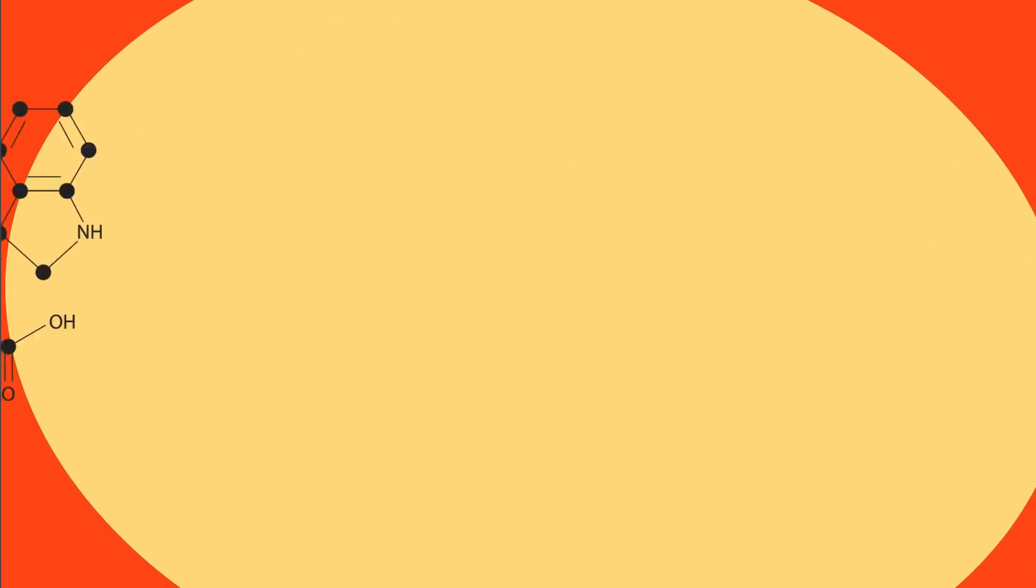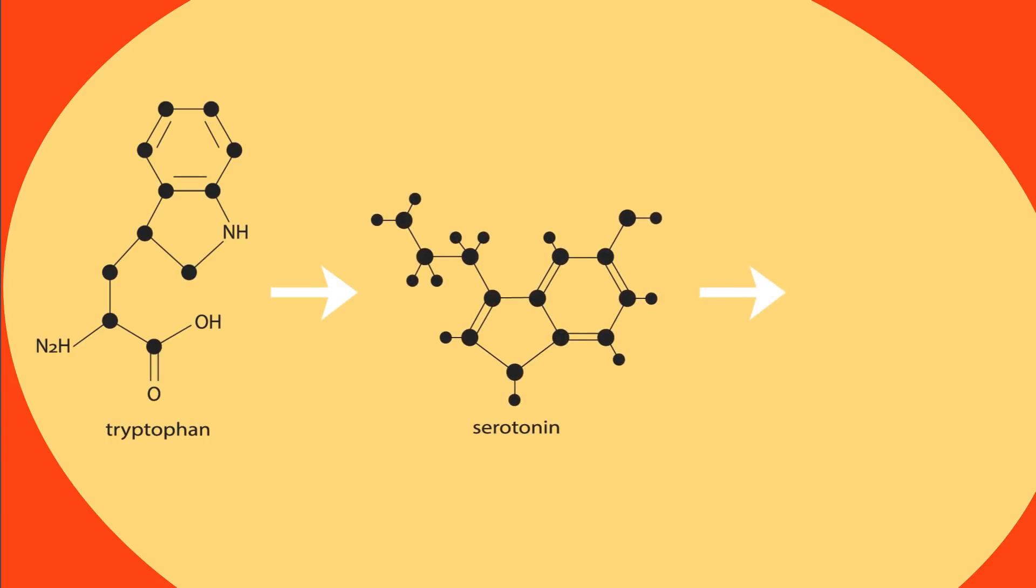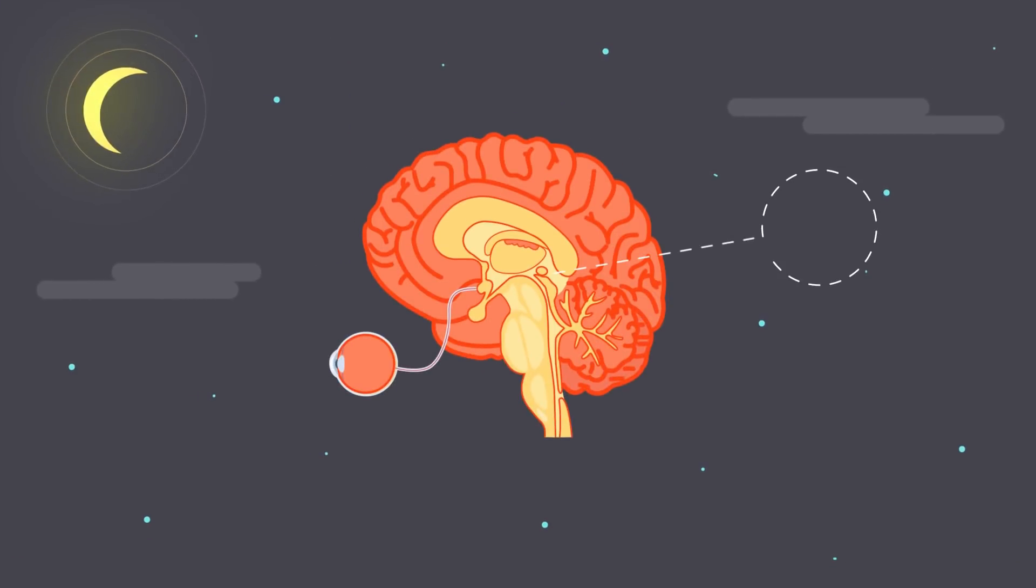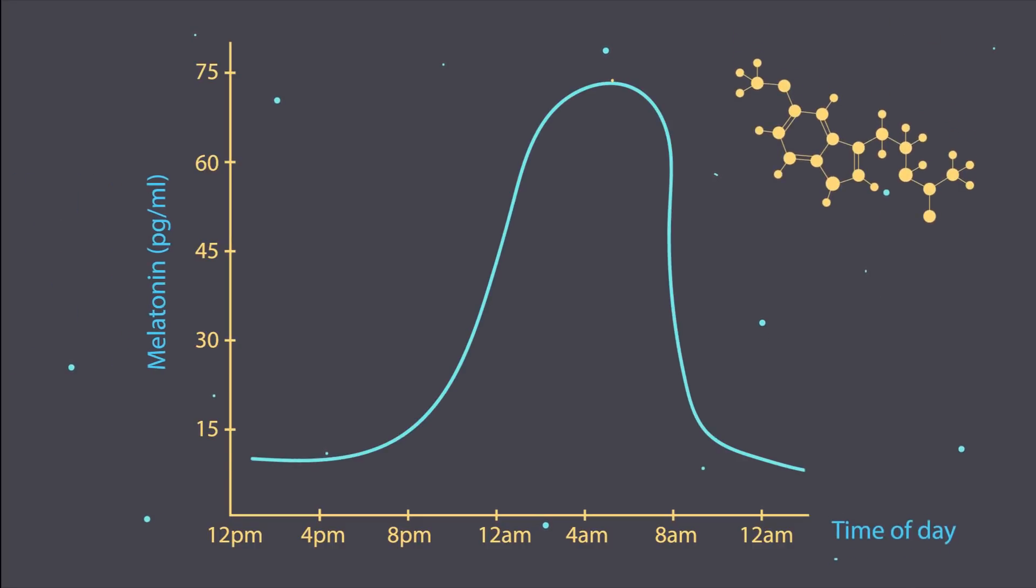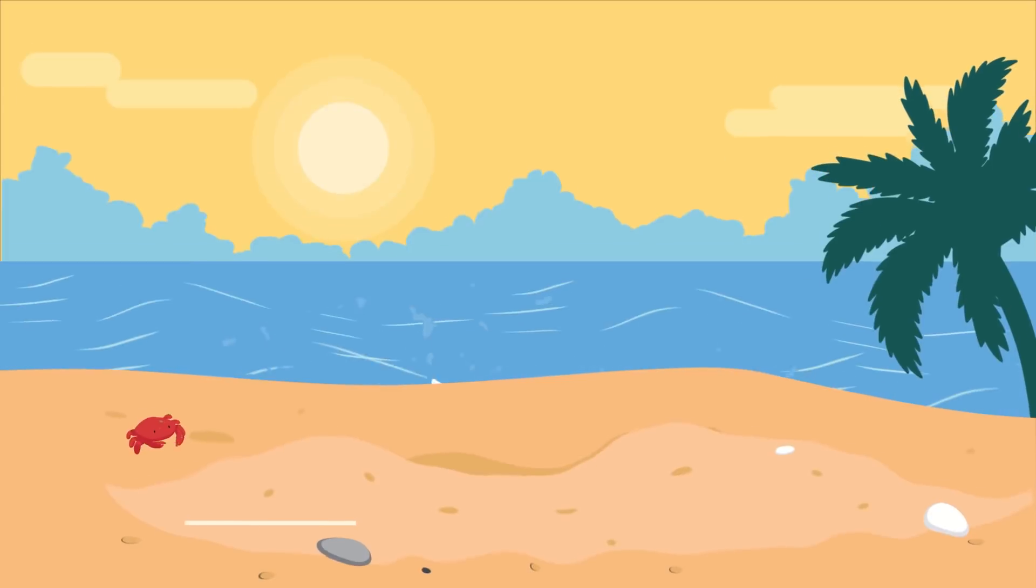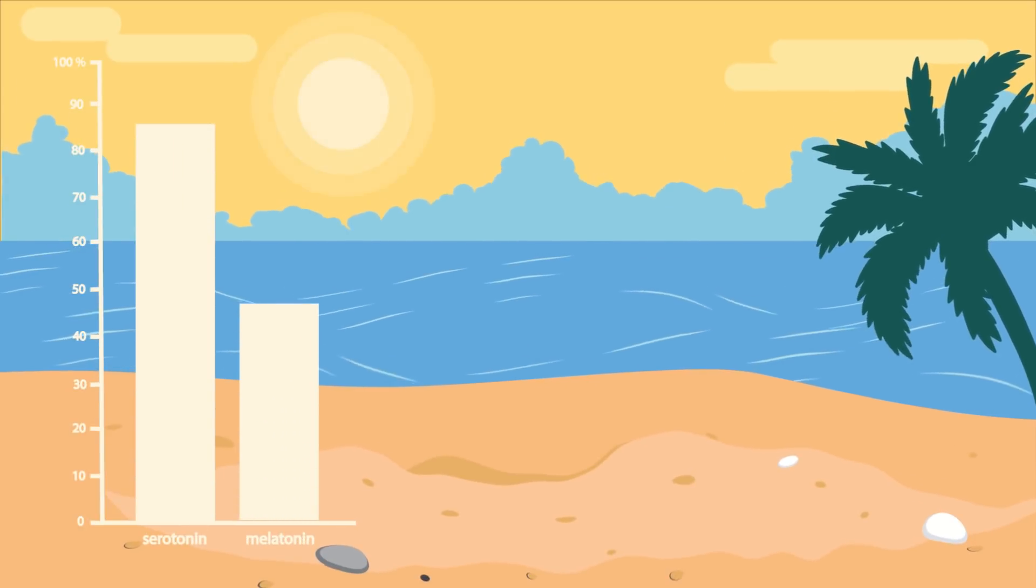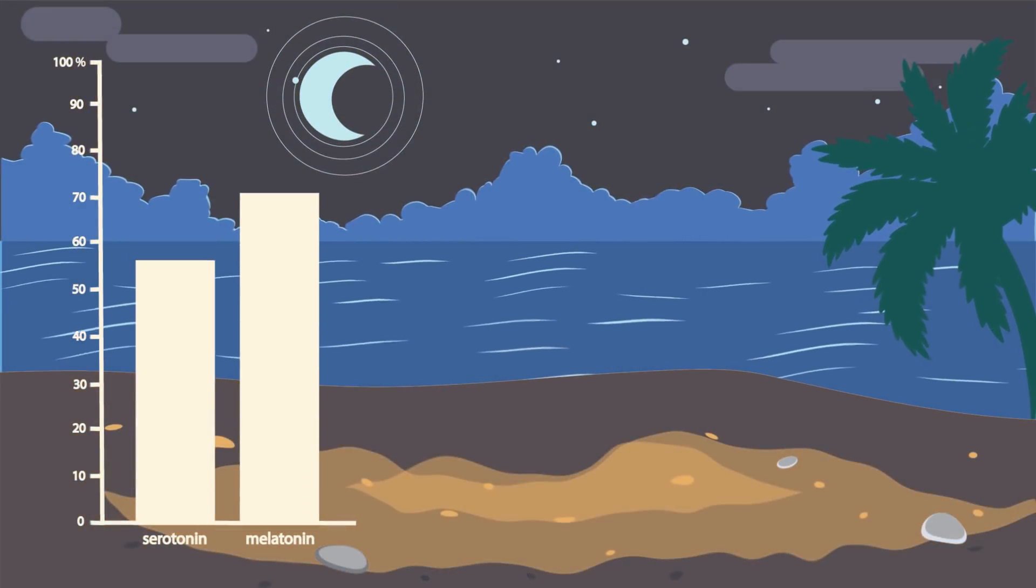But its main function is known as an endocrine gland, to release the sleep hormone melatonin. In darkness, the pineal gland converts the neurotransmitter serotonin to melatonin, to control the circadian rhythm of the body. Melatonin is known to control healthy sleep cycles and reduce anxiety and depression.